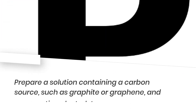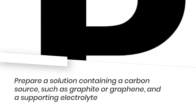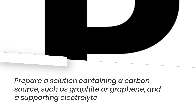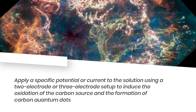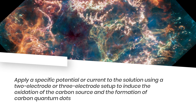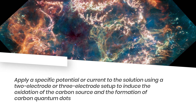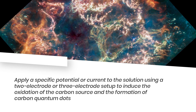Electrochemical oxidation: Prepare a solution containing a carbon source, such as graphite or graphene, and a supporting electrolyte. Apply a specific potential or current to the solution using a 2-electrode or 3-electrode setup to induce the oxidation of the carbon source and the formation of carbon quantum dots.